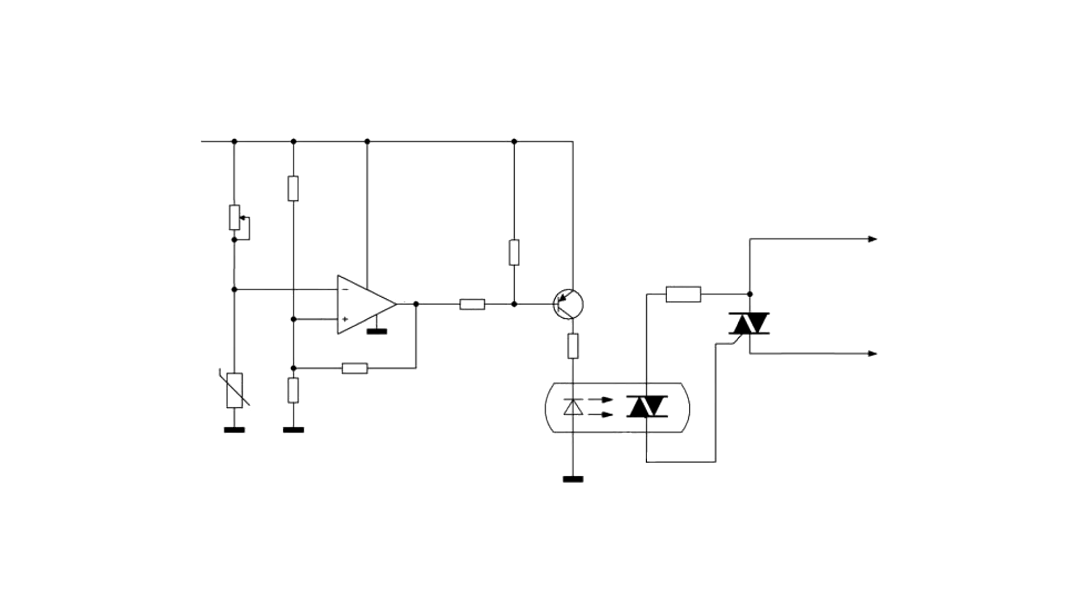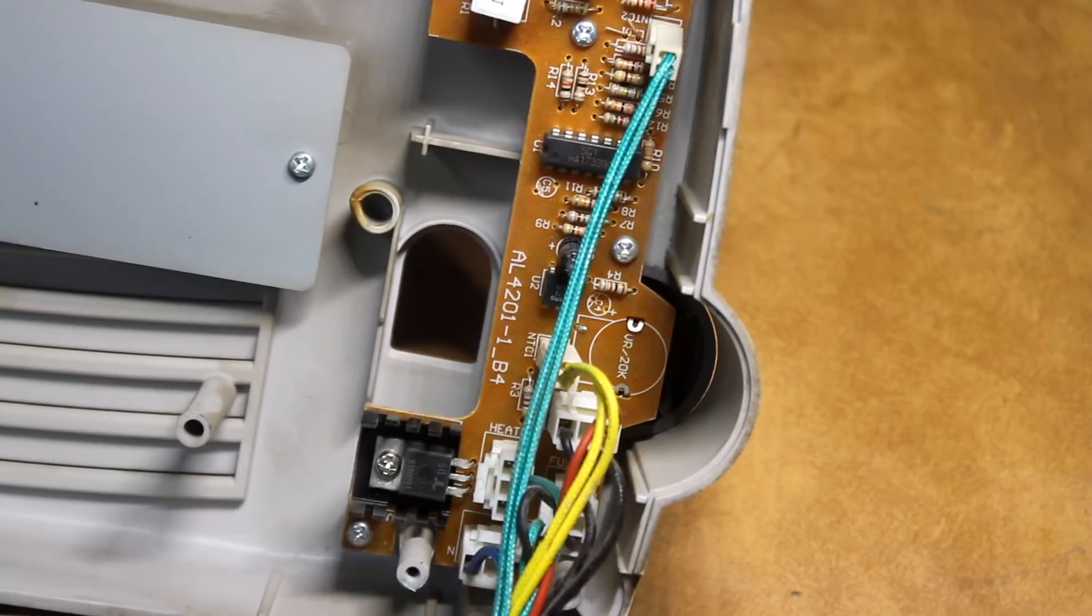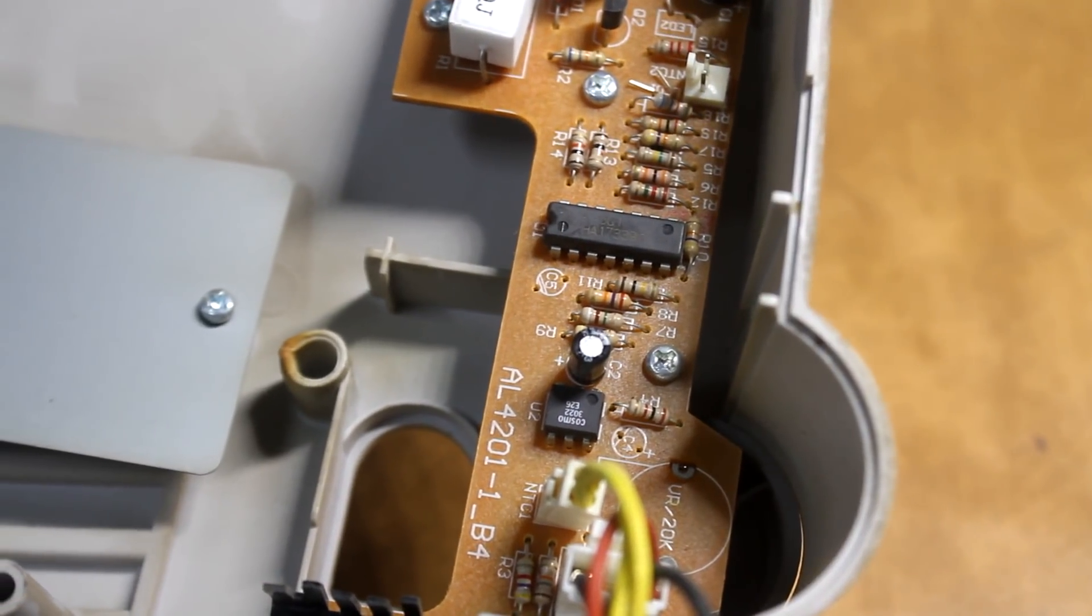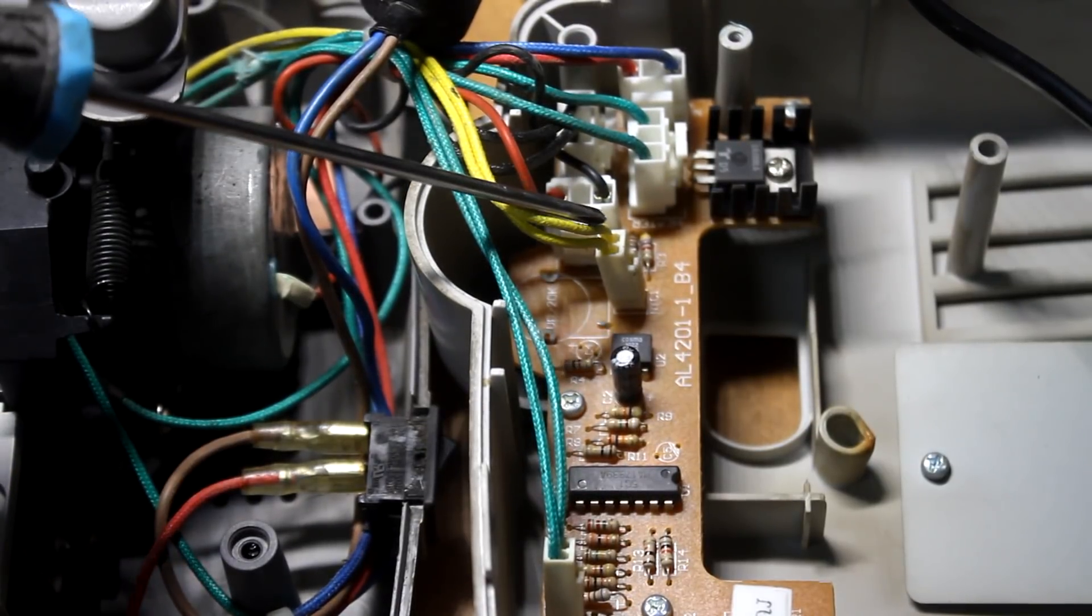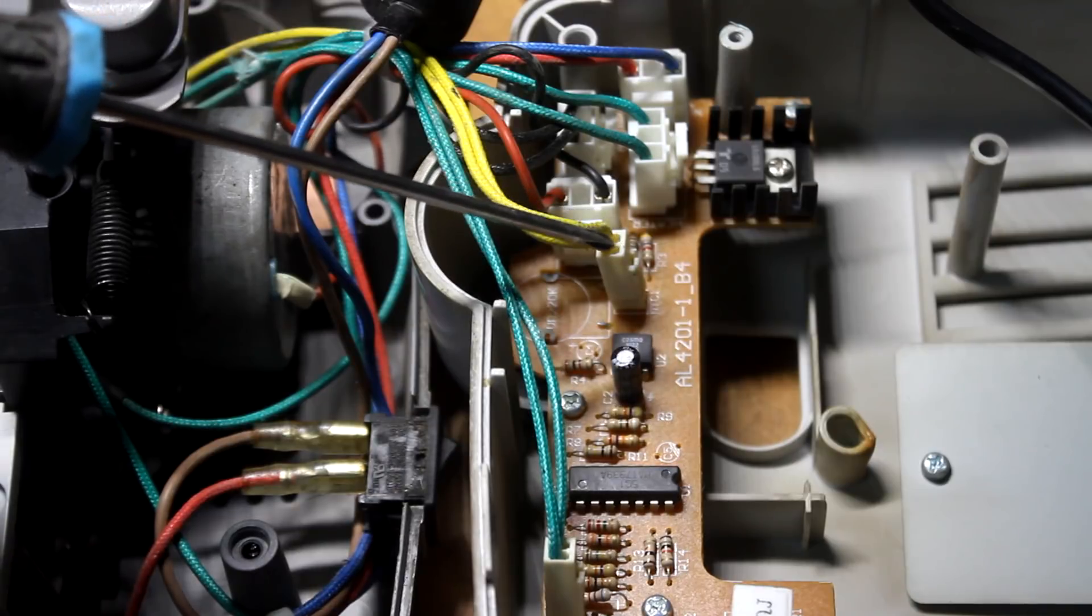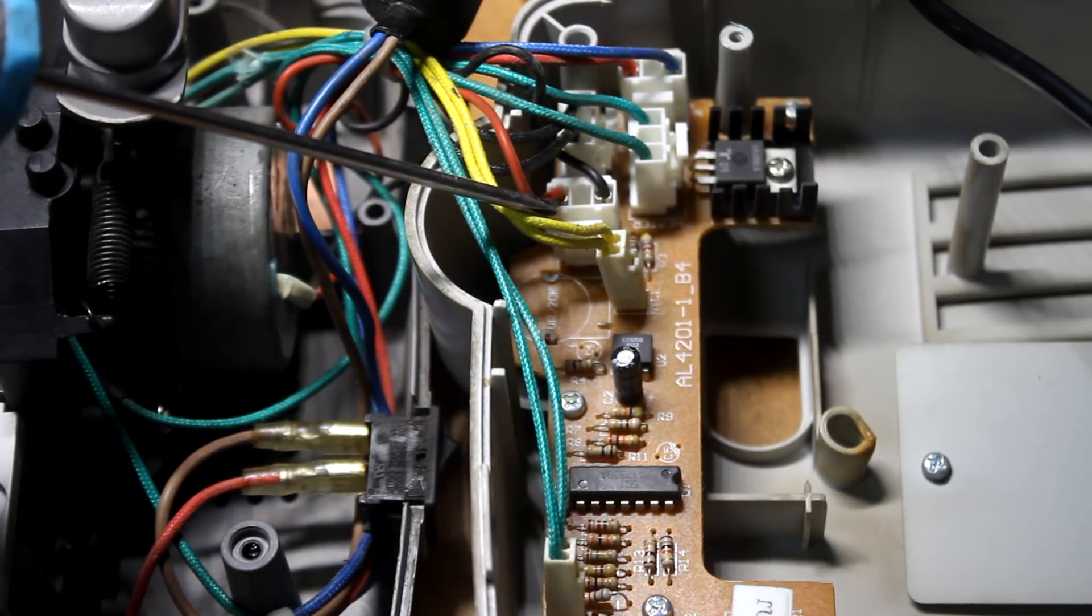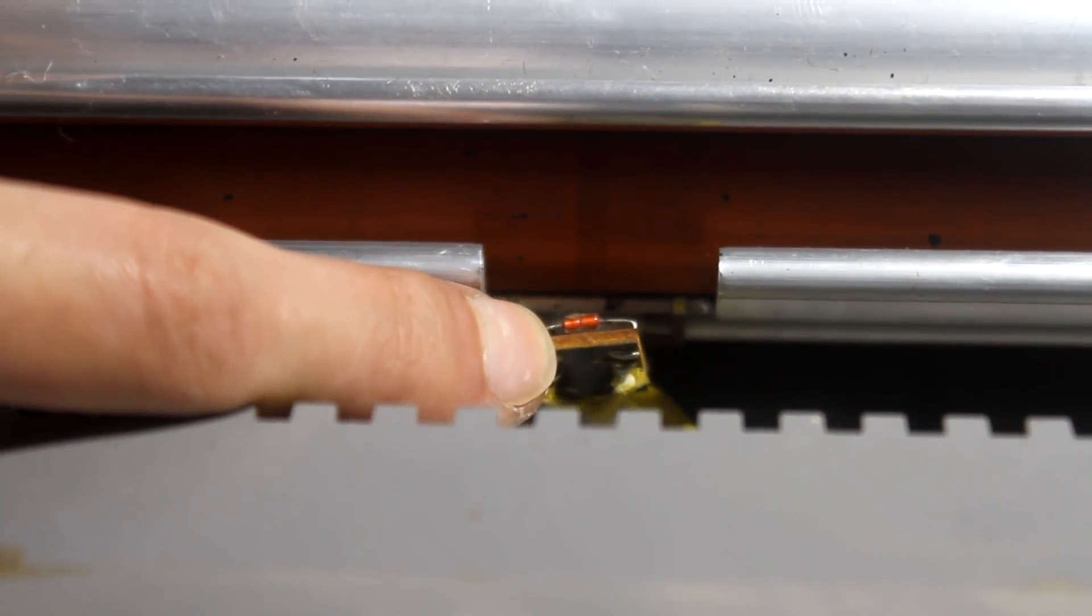By changing the resistance of the resistor of this divider, it is possible to increase the sensor operating temperature. In some laminators, there is an additional trimming resistor for this purpose. You can completely disable the thermal sensor by removing the appropriate slot. But in this case, the thermal sensor itself will be exposed to an abnormal temperature. This can have unpredictable consequences.